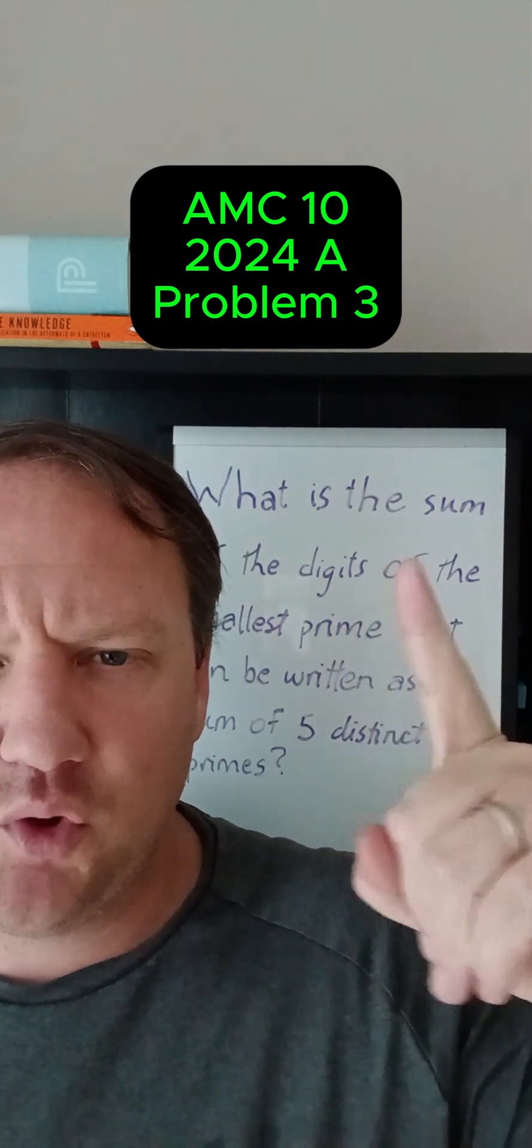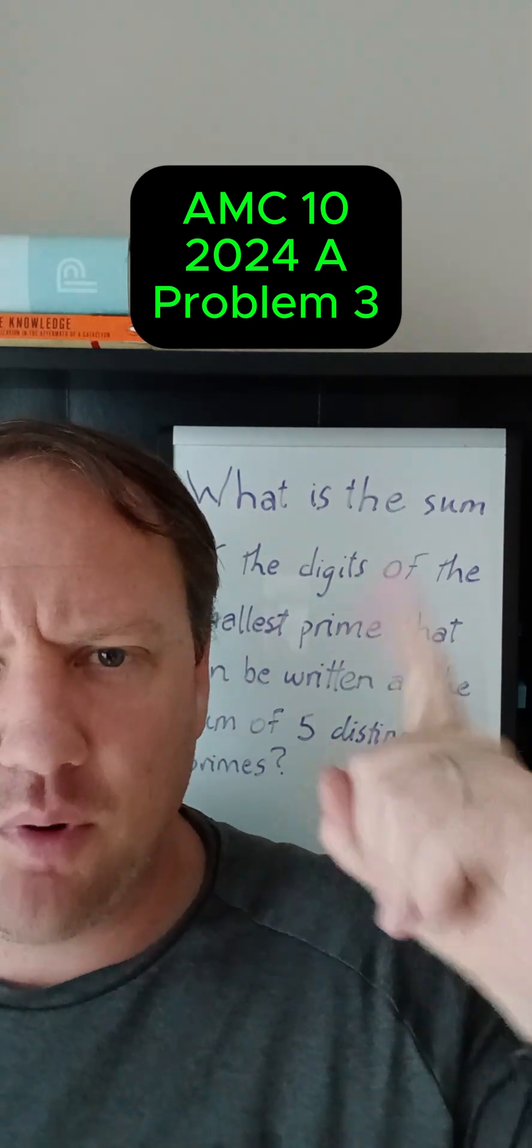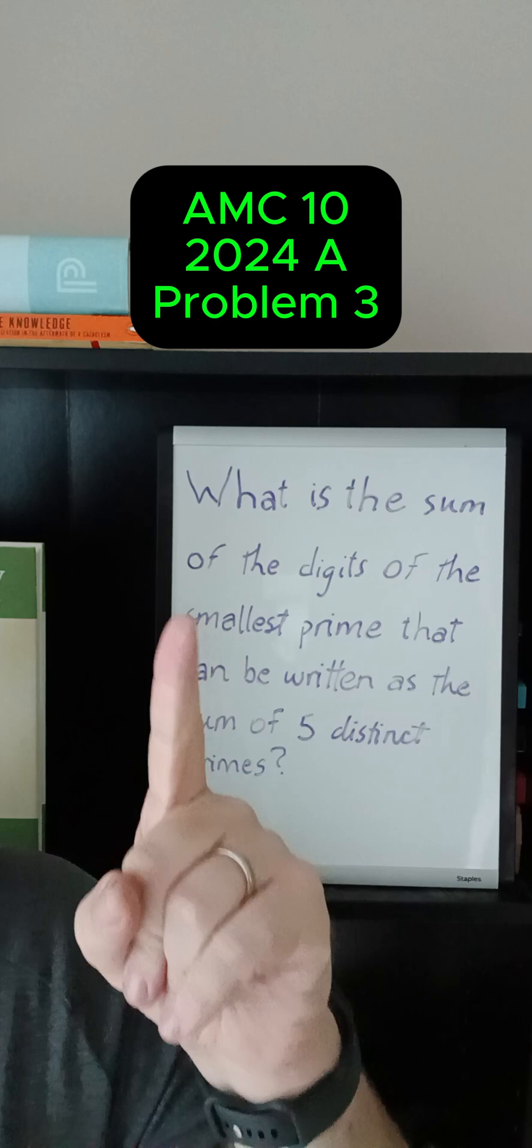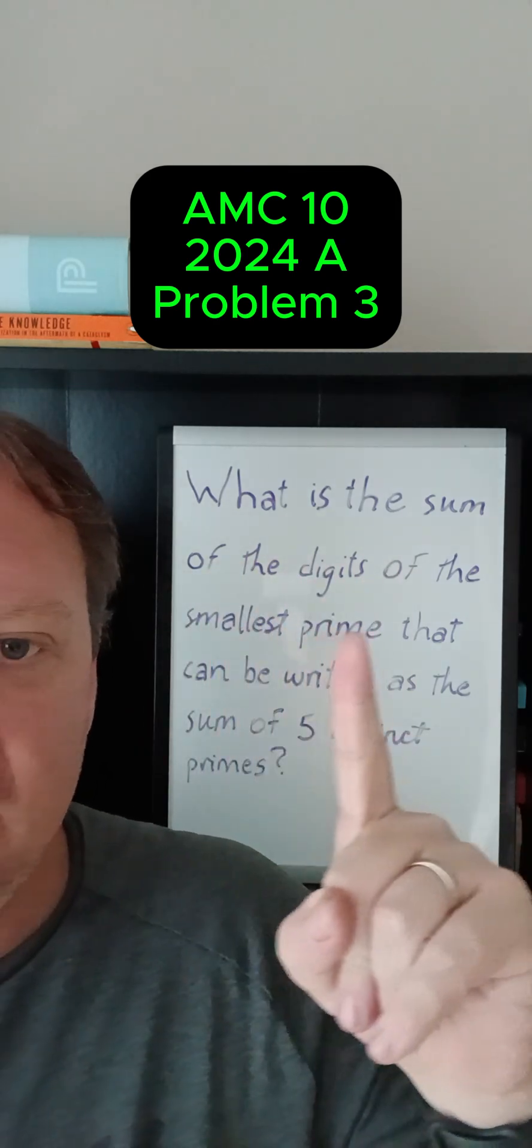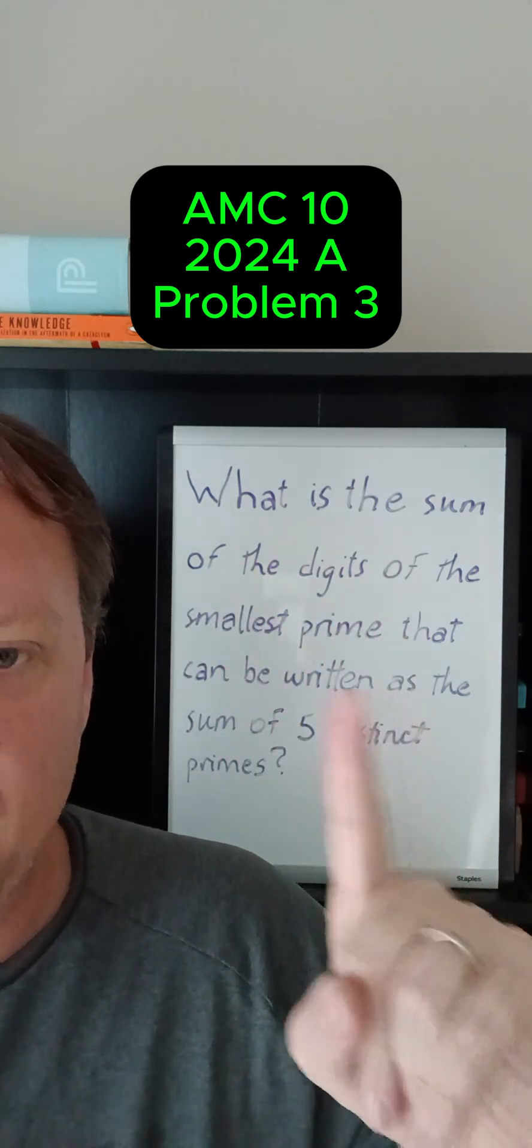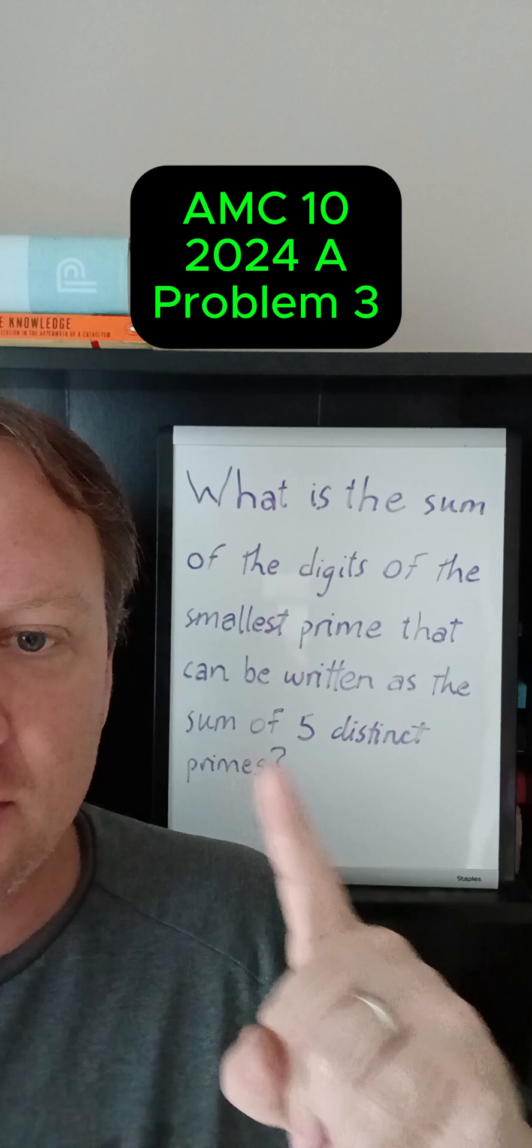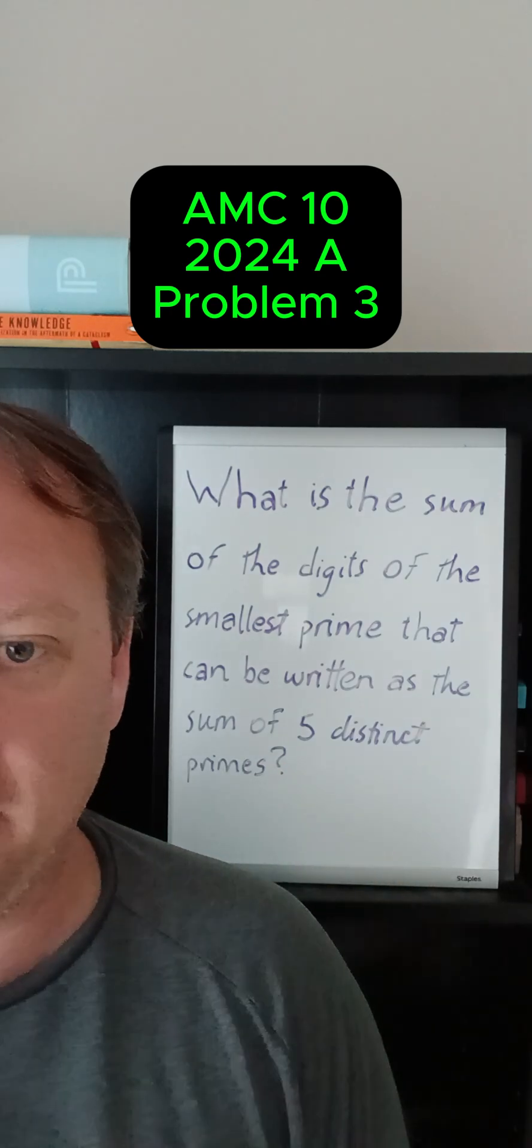From the AMC 10 from 2024 Part A, this is problem number three. It asks, what is the sum of the digits of the smallest prime that can be written as the sum of five distinct primes?